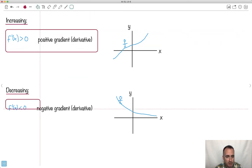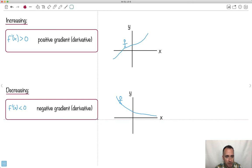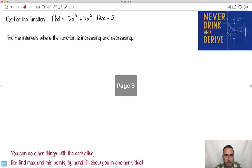So let's see if we can apply this to an example. I think that might be useful. So let's go ahead. Never drink and derive. Oh God, I hate myself. So for the function f(x) = 2x³ + 3x² - 12x - 5, let's look at where it's increasing and decreasing.